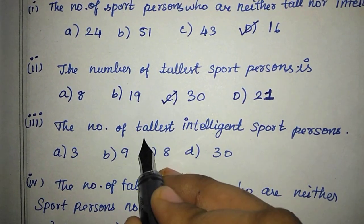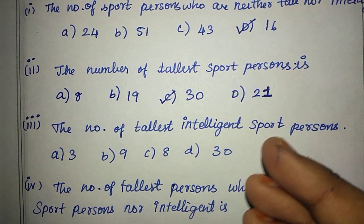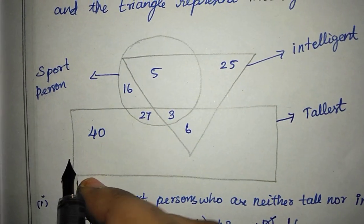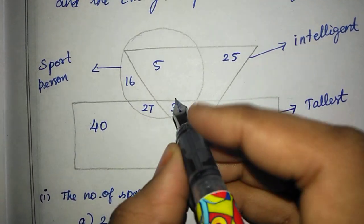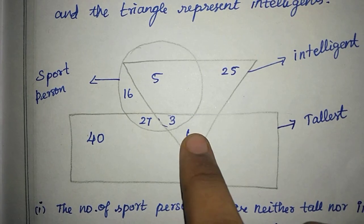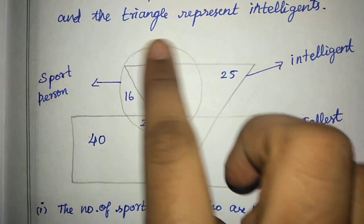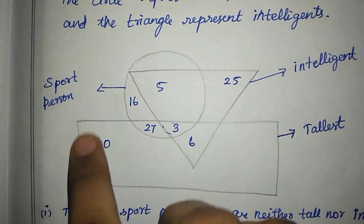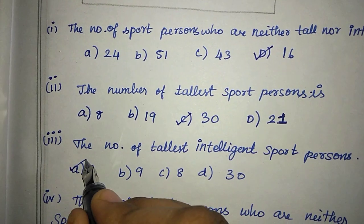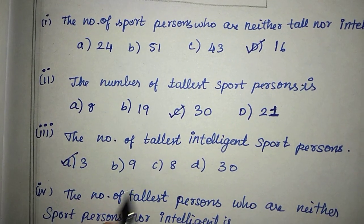The number of tallest intelligent sport persons — tallest is the rectangle, intelligent is the triangle, sport person is the circle. So this is 3. Tallest, circle and intelligent — this is 3. So the answer is 3. In the 27, this is the triangle, this is the circle and rectangle. So 3 is the right answer, option A, 3 is the right answer. Number of tallest intelligent sport persons is 3.